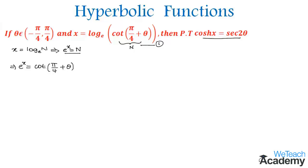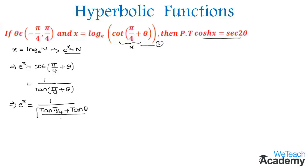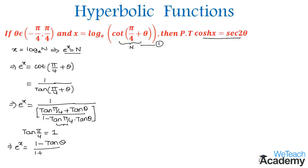Now let us convert cot in terms of tan. We can write this as 1 by tan of pi by 4 plus theta. By using the formula of tan a plus b, we get e power x is equal to 1 divided by tan pi by 4 plus tan theta divided by 1 minus tan pi by 4 into tan theta. Substituting tan pi by 4 equal to 1 and taking the reciprocal, we get e power x equal to 1 minus tan theta divided by 1 plus tan theta.